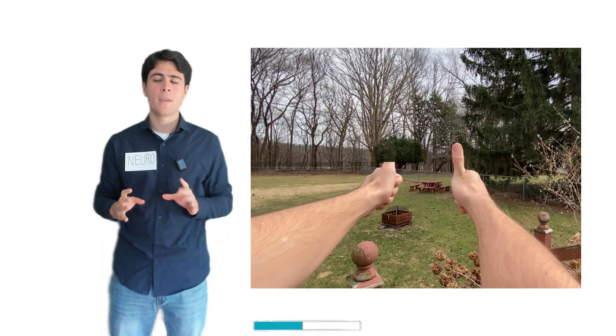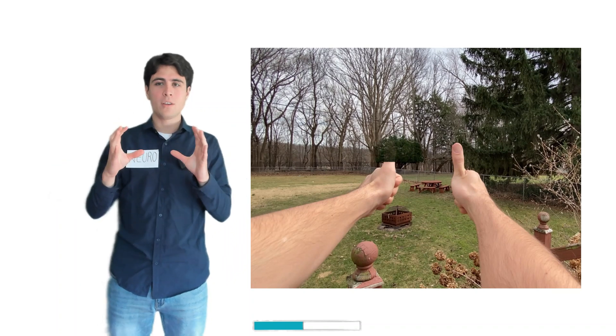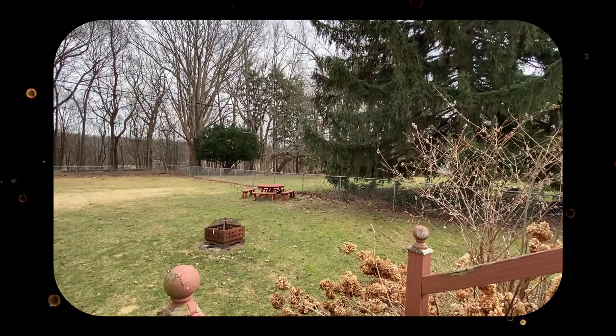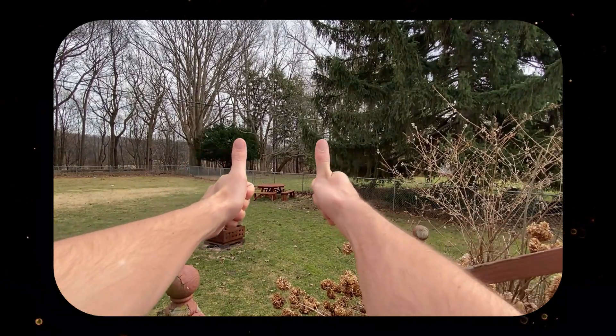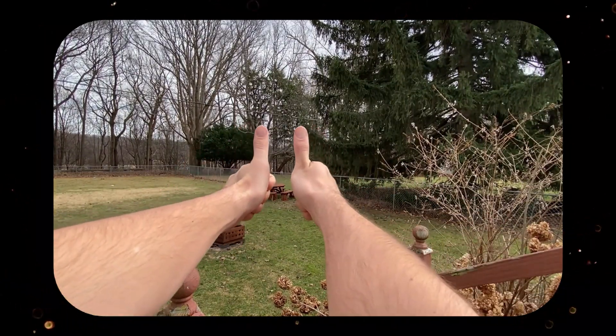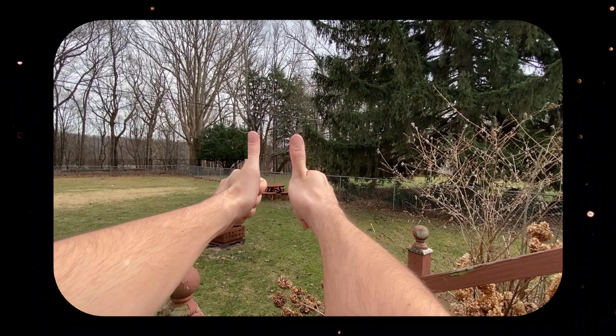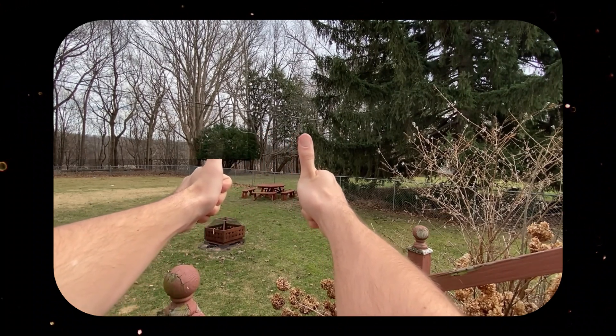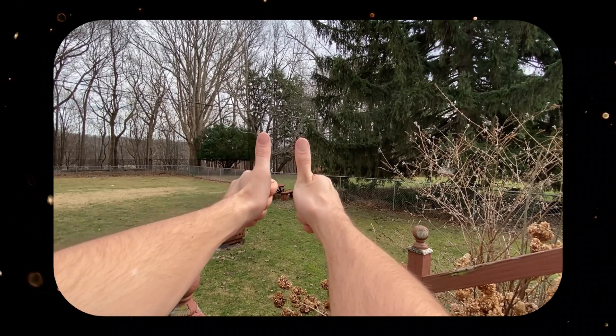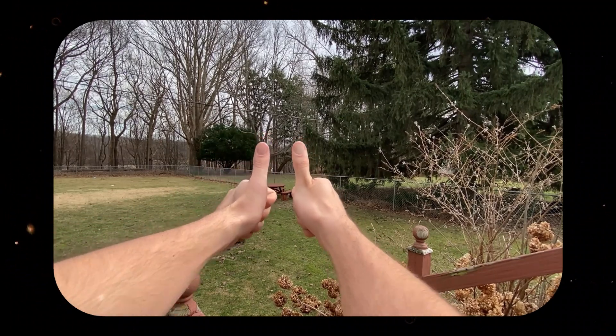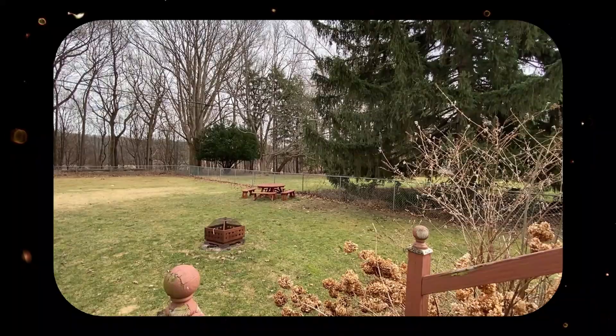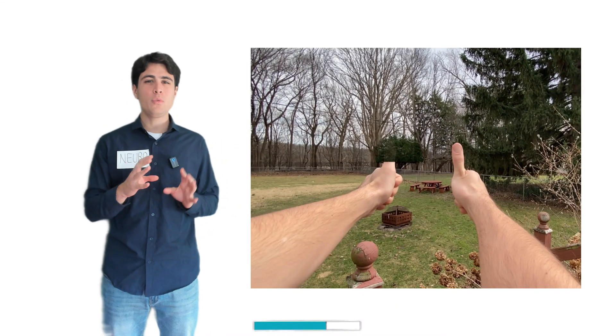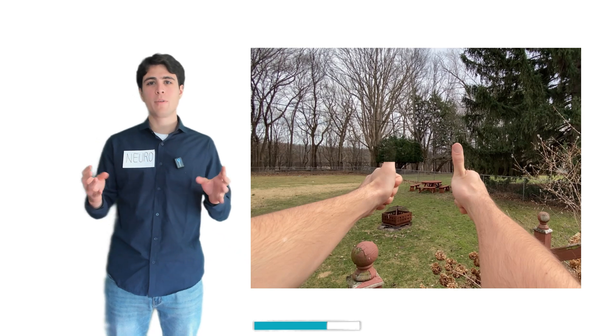But here's the crazy part. There's no black void where your thumb should be. Your brain fills in the empty space, tricking you into seeing a seamless world. This means that your brain isn't just receiving information like a camera. It literally constructs reality, filling in gaps based on expectation, memory, and context to create a model of the world. Essentially, our brain is guessing what's out there, and then using those guesses to interpret the incoming data.